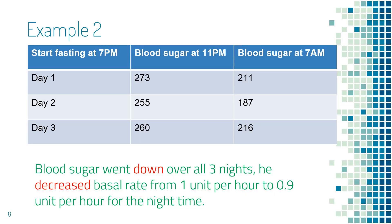In this second example, this person also wanted to test his basal rate overnight from 11 p.m. to 7 a.m. So he started fasting at 7 p.m., checked blood sugar at 11 p.m., went to sleep, then checked again at 7 a.m., and had breakfast. He also tested on three different days. His blood sugar went down over all three nights, so he reduced basal rates by about 10% from 1 unit per hour to 0.9 units per hour for the night time.